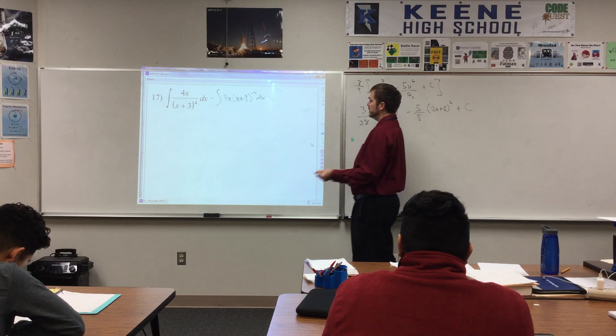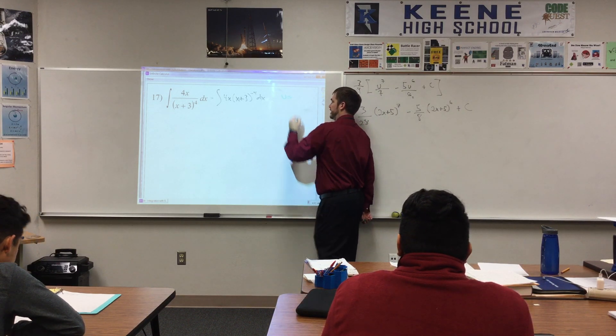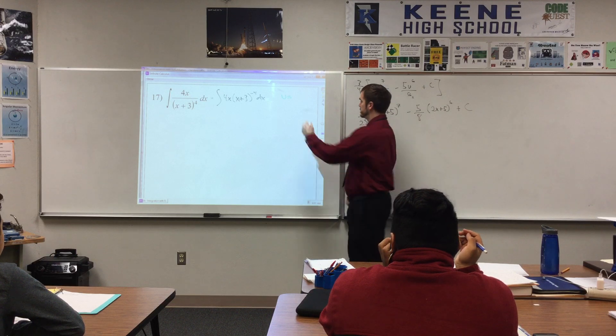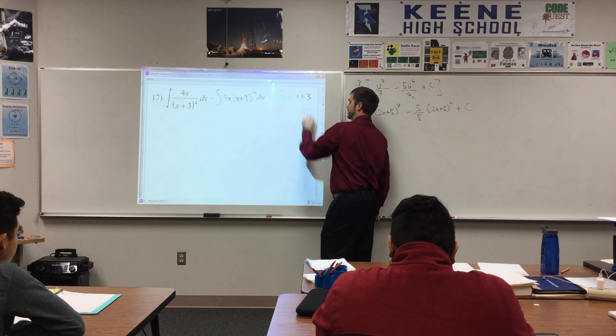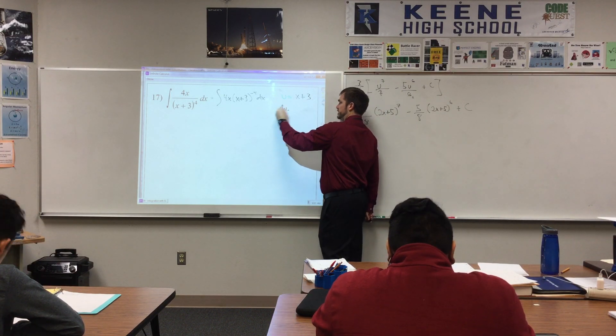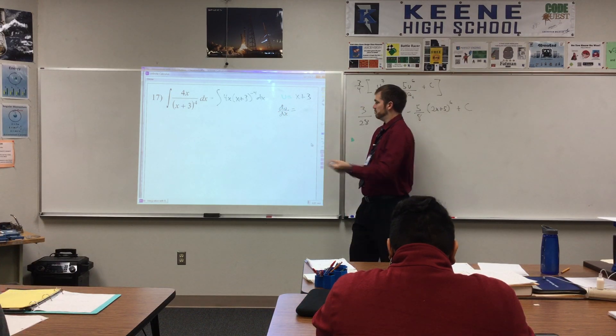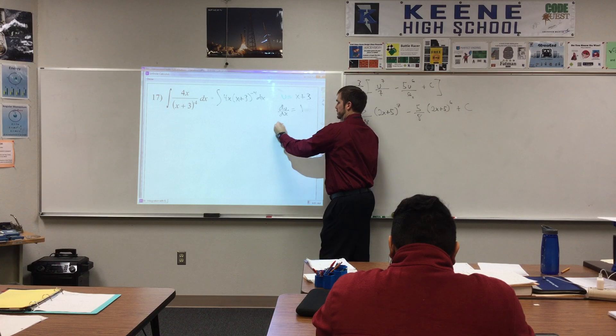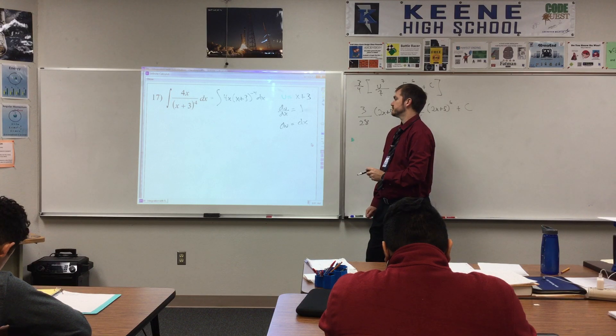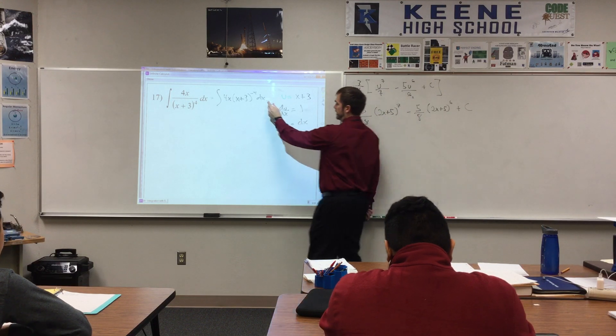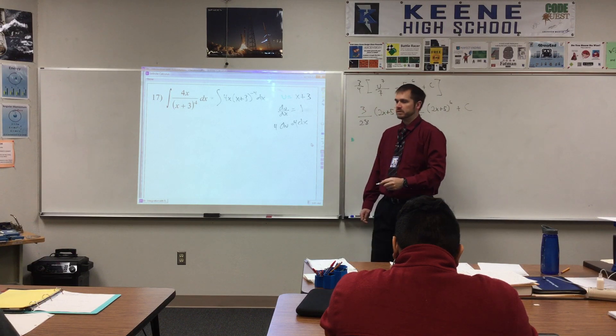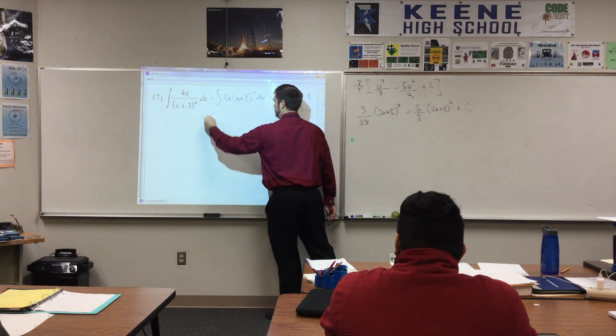So, first thing we might want to do is just rewrite this as 4x times x plus 3 to the negative fourth dx. Alright, what is a u value that y'all like? x plus 3. So then, working on down the line, du over dx equals 1. So, du equals dx. That's kind of interesting. But I don't just have a regular old dx here, I have a 4 dx. So, we'll just multiply both sides by 4.